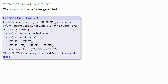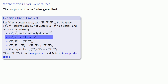First of all, we want the inner product of any vector with itself to be zero if and only if the vector is itself the zero vector. Next, we want the inner product of any vector with itself to be greater than or equal to zero for all vectors.